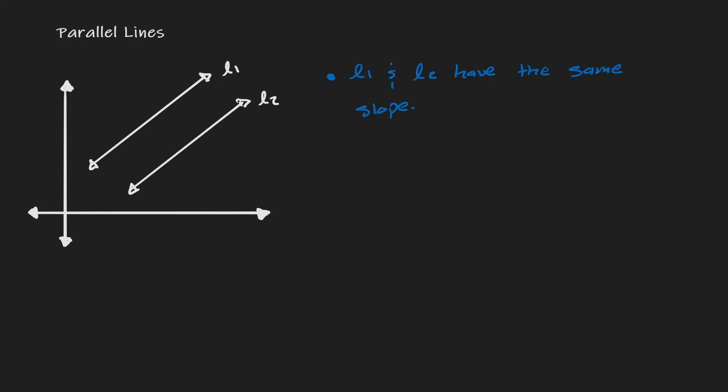And this is the property that we're going to be using throughout the lesson. Parallel lines share the same slope.